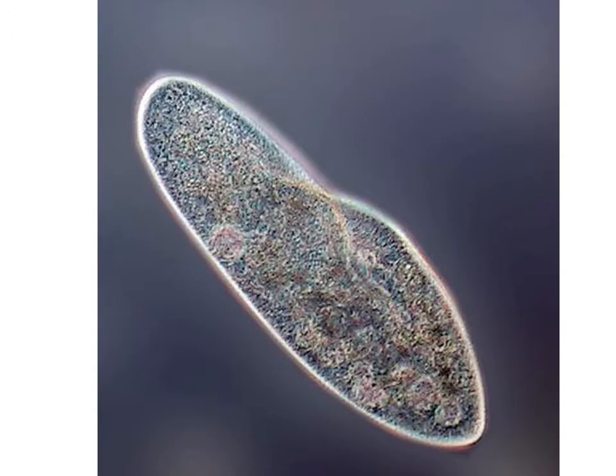For Paramecium caudatum, it is important to know that they have something very similar to our sexual reproduction — it is called conjugation. This process occurs when two individuals approach each other, connect, and exchange genetic material. It is called conjugation, a primitive way of sexual reproduction.